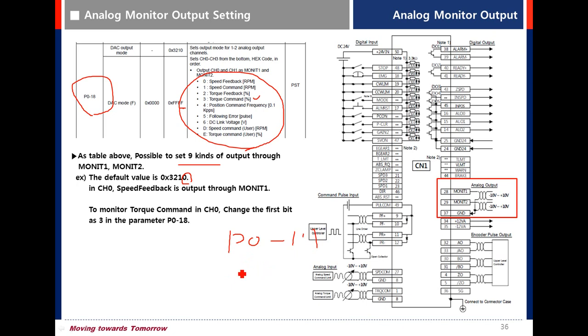In digit 4, value 0 represents minus 10 to plus 10 volts, while value 1 represents 0 to 10 volts.